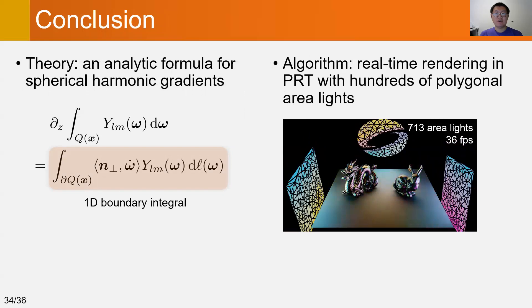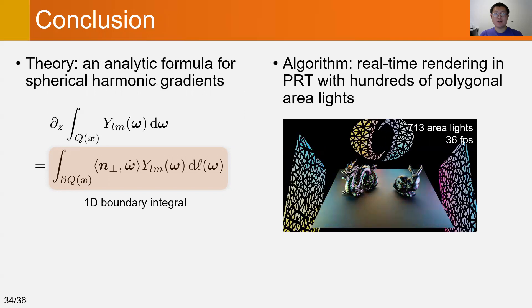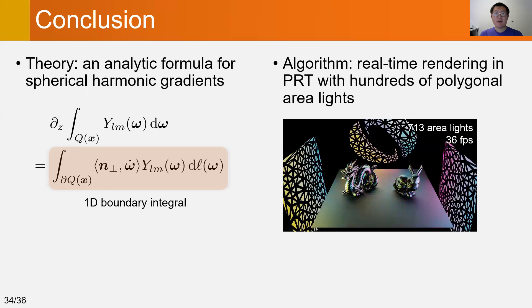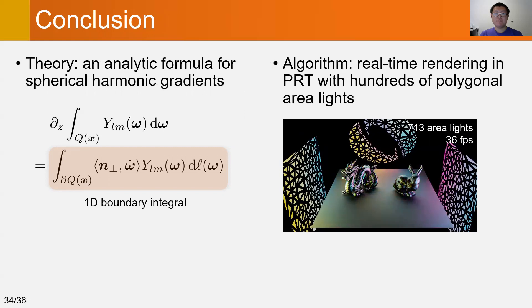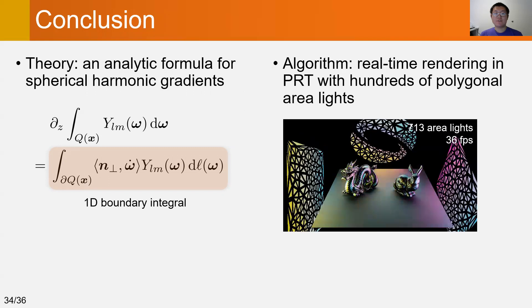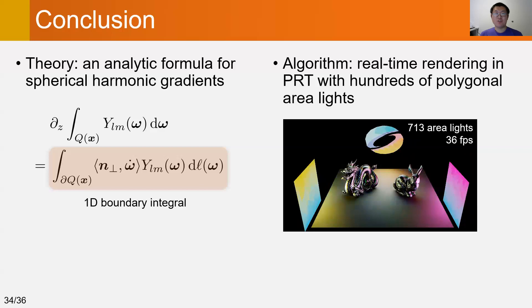and use an accurate Hermite interpolation. This enables real-time rendering of scenes with hundreds of area lights, which was intractable previously.